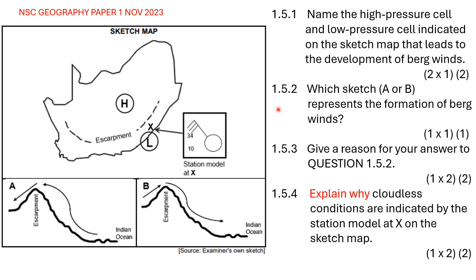Question 1.5.2 says which sketch — A or B — represents the formation of bergwinds. In sketch A, the wind moves from the coastline up the mountain towards the plateau and the interior of the country. Whereas in sketch B, the wind starts on the plateau and goes down the mountain towards the coast. The correct option would be sketch B.